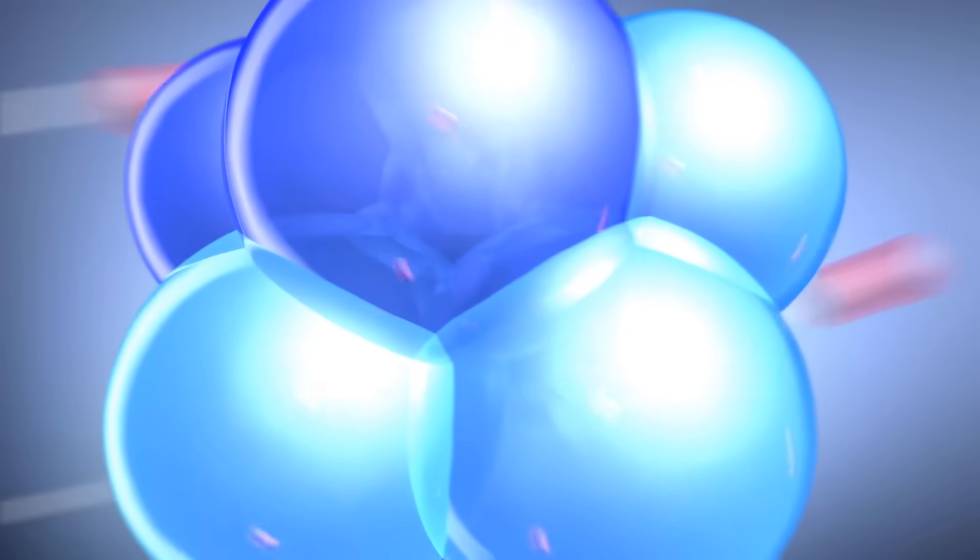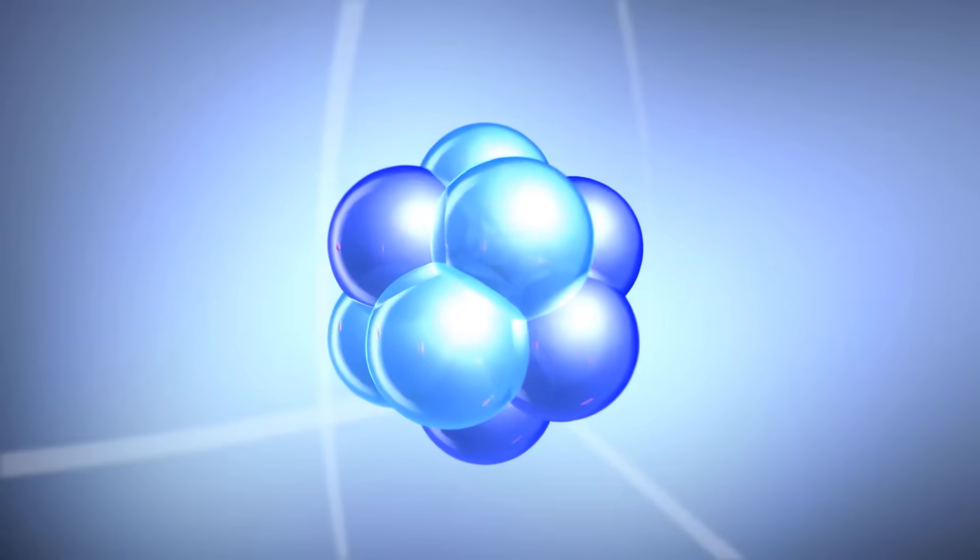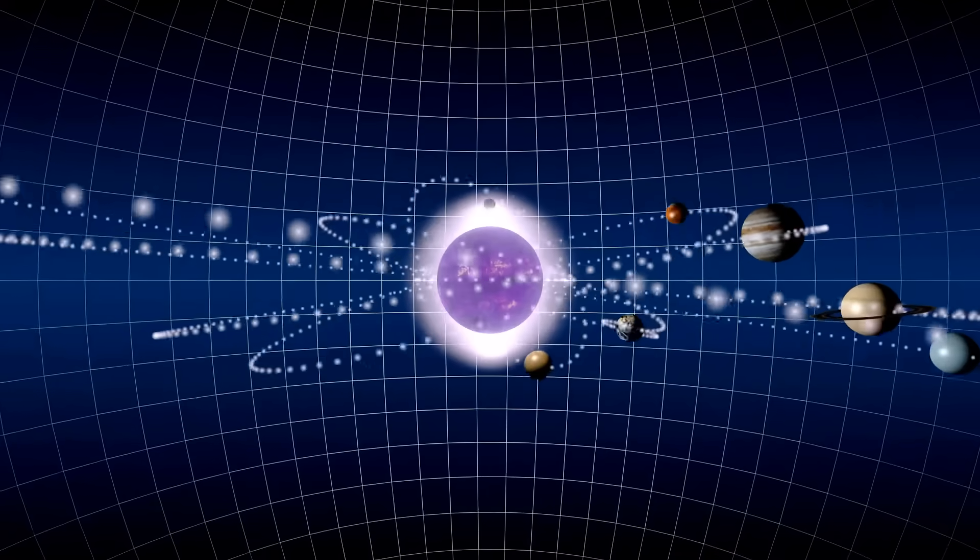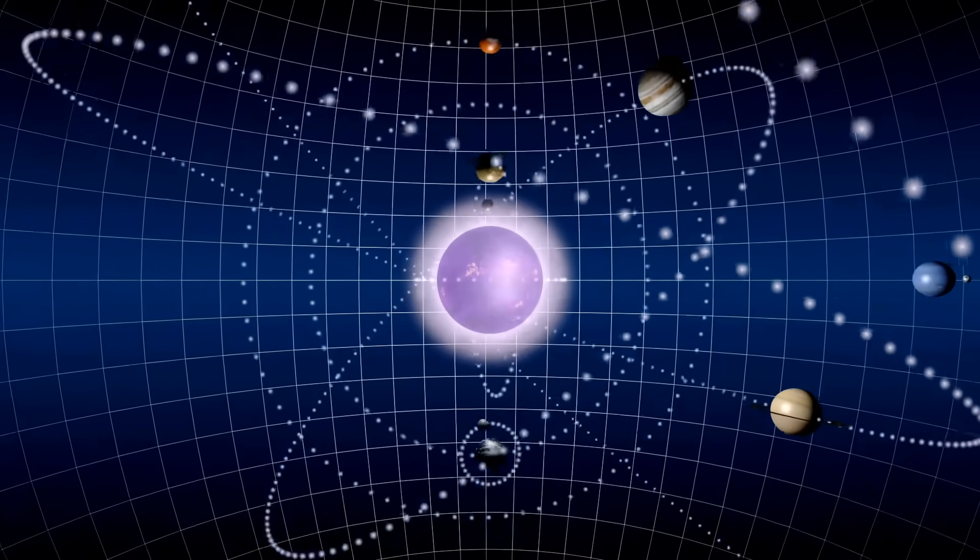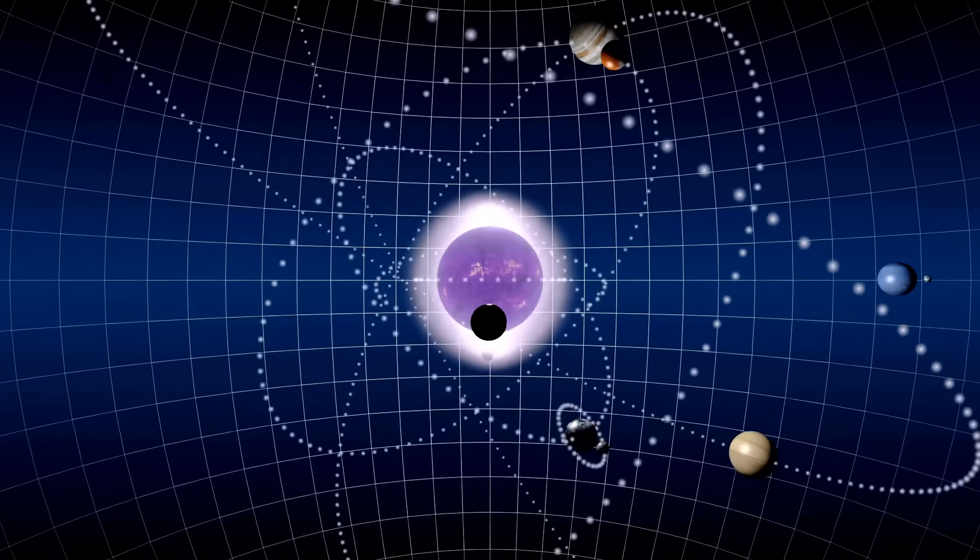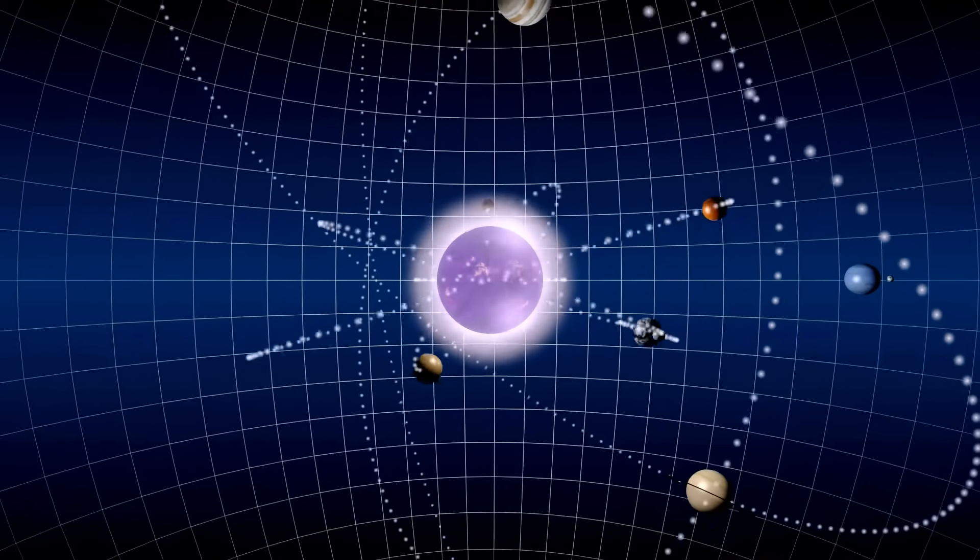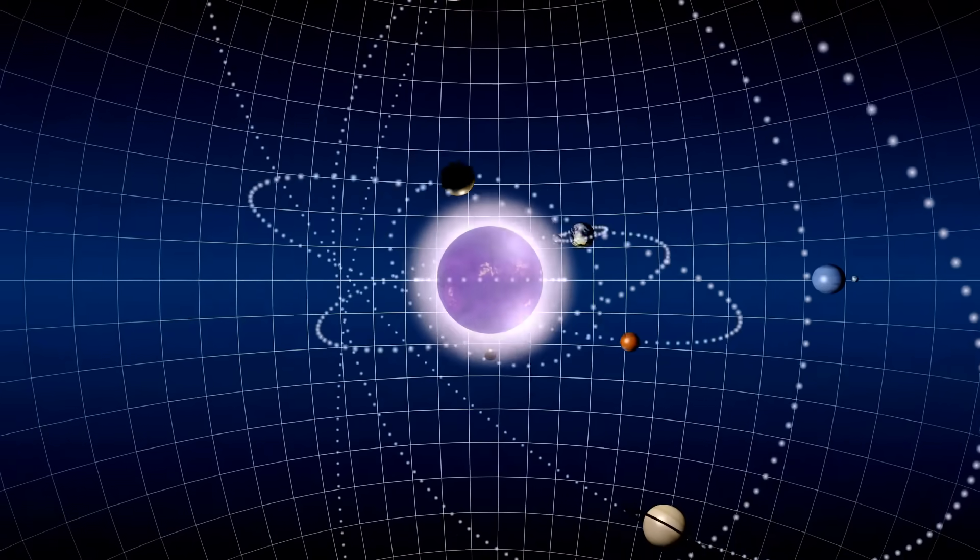Is our solar system mimicking the behavior of an atom? This concept, inspired by the ancient belief as above so below, suggests that the macrocosm of our solar system could be reflecting the microcosm of an atomic structure.